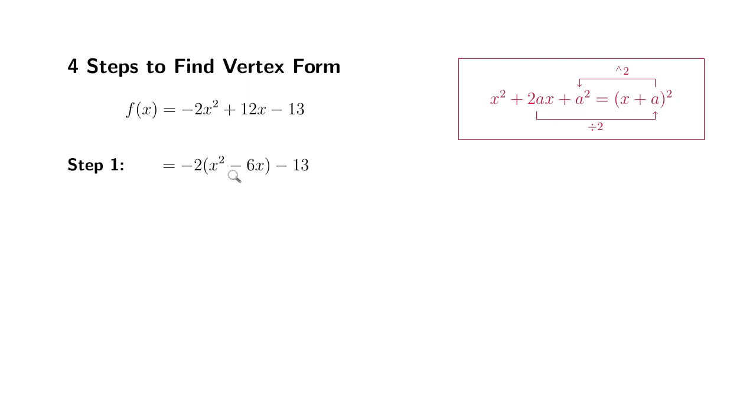In order to complete the square here, we need three terms, x squared plus 2ax plus a squared. Then we can write it as quantity x plus a squared. Let's pay attention to these numbers here. Coefficient in front of x, if you divide it by 2, you're going to get the a value here. If you square that number, you're going to get the a squared, which is the third term. So the third term we need is going to be always take this number, divide by 2, and then squared.